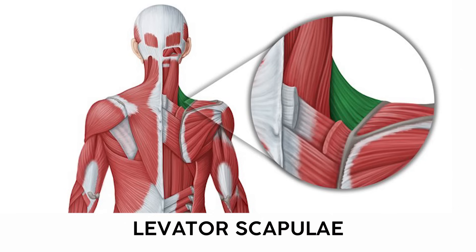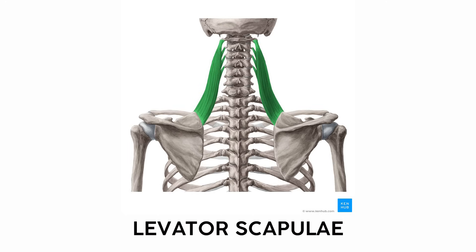Finally, a muscle we talked about in the neck unit: the levator scapulae, which does exactly what you think — it elevates the scapula. But be careful, there are lots of neck muscles in this area that run superior to inferior. The levator scapulae will be the only one that attaches vertebrae way high in the neck to the top of the scapula.